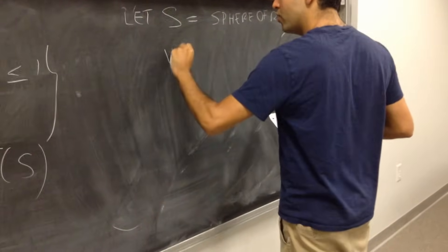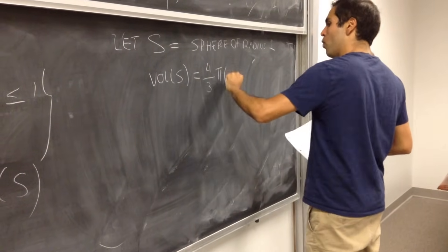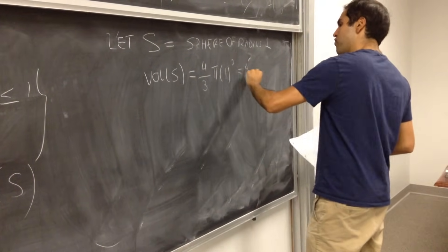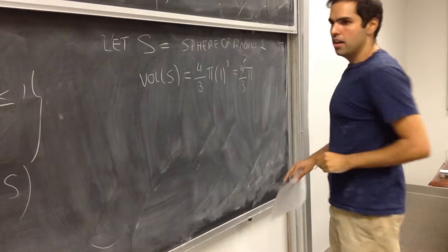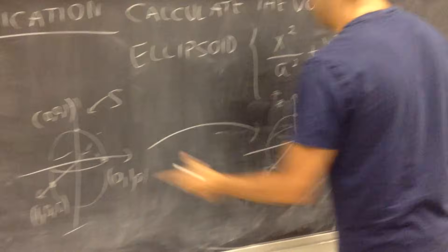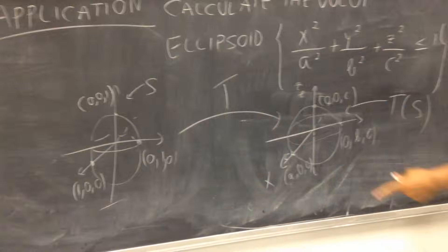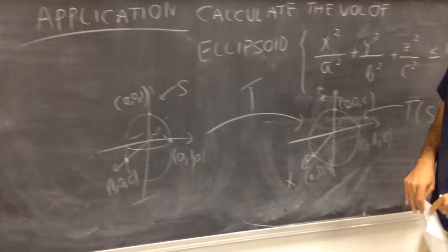Then, what's the volume of S? Well, it's just 4 thirds pi 1 cubed, which is 4 thirds pi. Okay, that's good. We found our solid S. We found T of S, but of course, what about T? What about us?